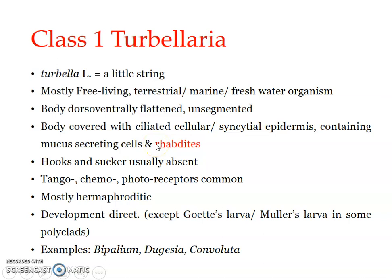Adhesive structures are present, including glandular or glandulo-muscular cells. However, hooks and suckers are absent in Turbellarians — these are structures found in most of the parasitic forms of Platyhelminthes.